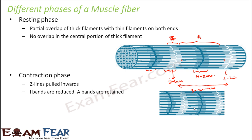Looking at the contraction phase, the Z-line has moved inward, so the length of the sarcomere has reduced. The sarcomere has contracted, the I-bands have reduced in width, and the H-zone has also reduced in width. Please understand how the structure of the muscle fiber differs in the resting phase versus the contraction phase. Next, we will talk about the mechanism — how and why the Z-lines are pulled inwards.